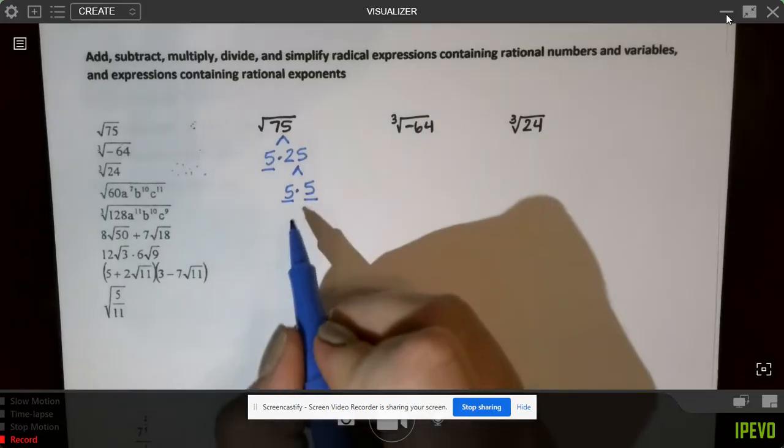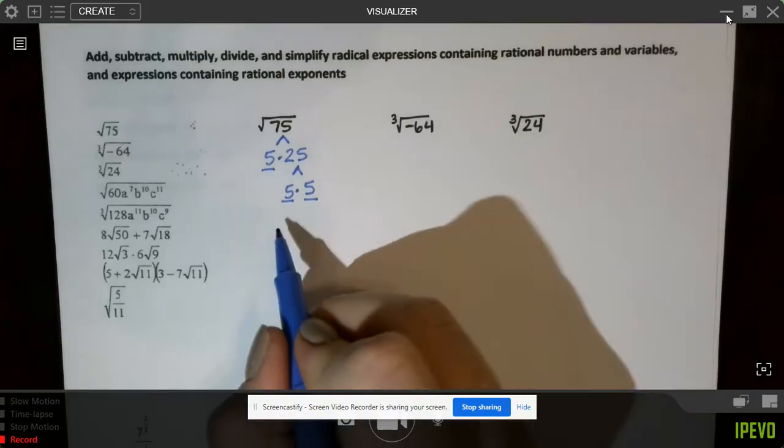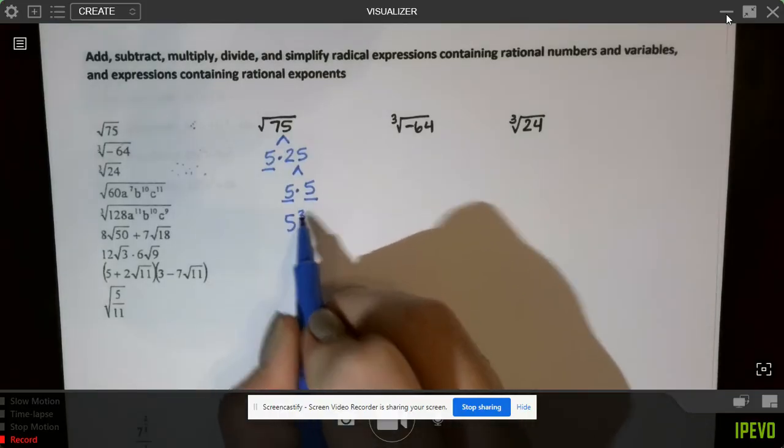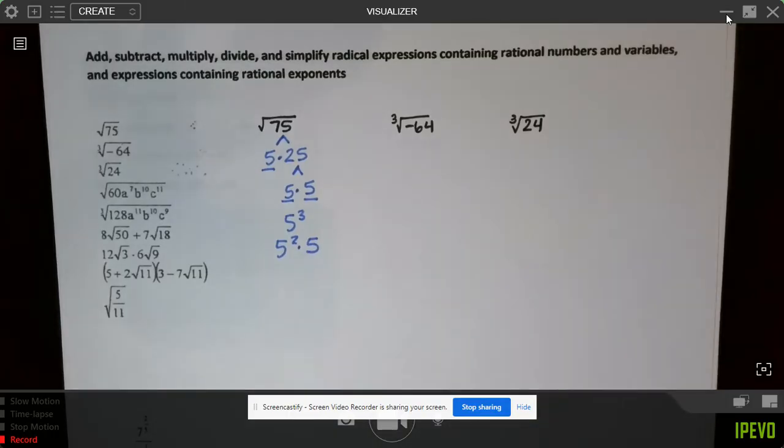Now, we have three sets of 5, right? 5, 5, 5, and so we could write this as 5 cubed. We could write that as 5 squared times another 5. Either way,